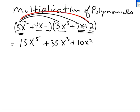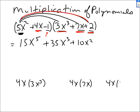Now I'm going to take the second term, 4x, and multiply it by 3x cubed, then by plus 7x, then by positive 2. After that I'll go to the negative 1. So: 4x times 3x cubed — 4 times 3 is 12, and 1 plus 3 is 4 — gives me 12x to the 4th.